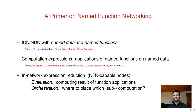What NFN offers is an in-network expression reduction service which is performed by certain NFN-capable nodes. This includes two things: the first one is the evaluation where function code is applied to data, and the second one is orchestration, which is about the decision of where to evaluate which computation or subcomputation.